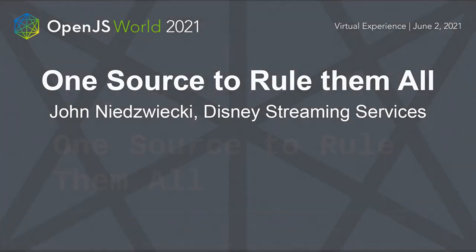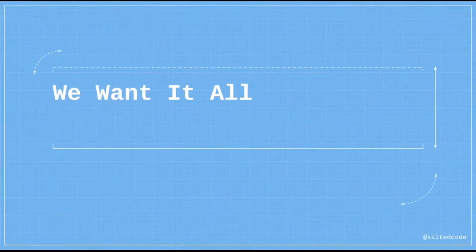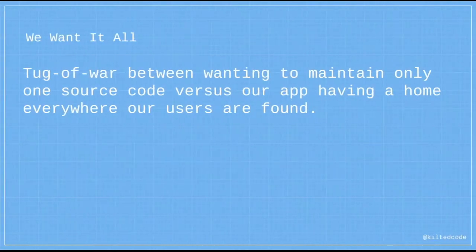Welcome to 'one source to rule them all.' It's not uncommon that we, and decision makers, want it all. In a world of applications, we want both a web presence and a native mobile presence — but what we don't want is to maintain competing parallel code bases. This leads to a tug of war between maintaining only one source code versus having our app everywhere our users are found.